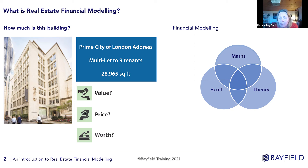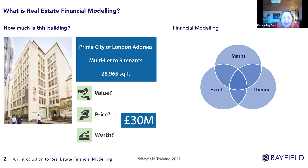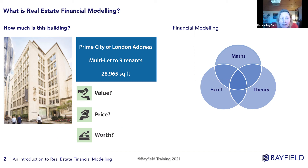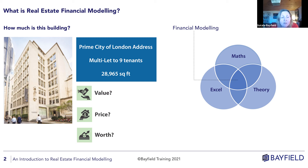Looking at the poll results, there's a strong opinion around 30 million. It doesn't matter whether you put 28, 30, or 32 million — the important thing is to get a feel for the scale and size of the numbers. There are three key variables here: the first is the size of the building, which obviously has an impact on how valuable it is. The bigger it is, the more space you can let out — perhaps to one tenant or, in this case, to nine tenants — allowing you to draw up more leases and charge more.